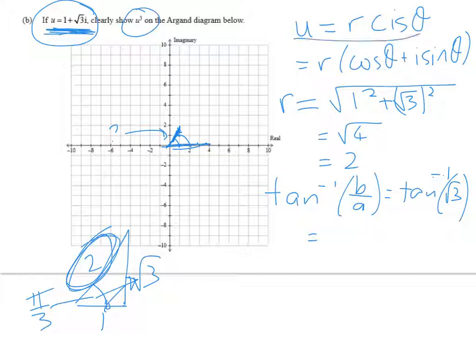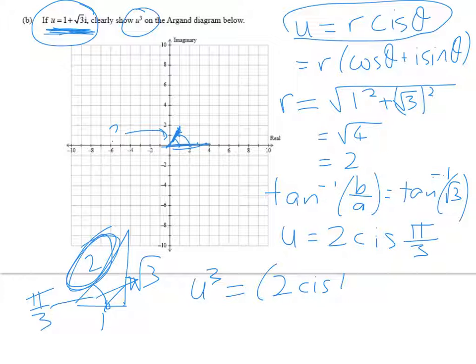So we can write u as 2 cis pi on 3. And then by de Moivre's theorem, u cubed is equal to 2 cis pi on 3 cubed, which is going to equal 8 times cis of 3 pi on 3, which is 8 cis pi.